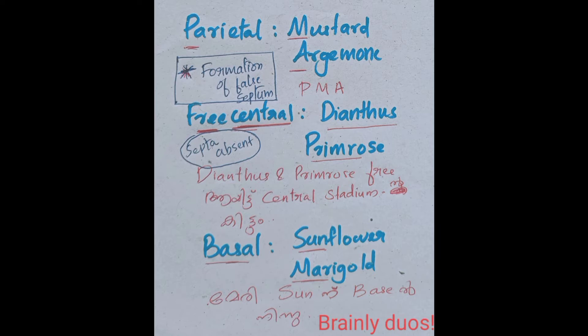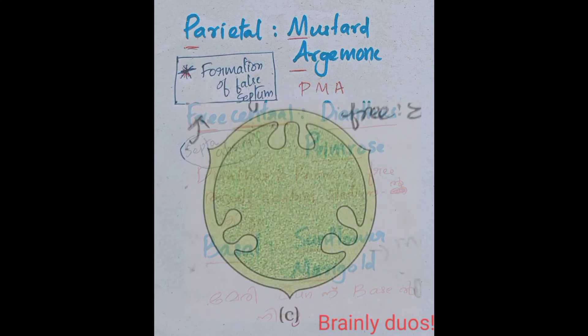The ovules are developed in the parietal placentation. The ovules are developed in the peripheral. Parietal peripheral.